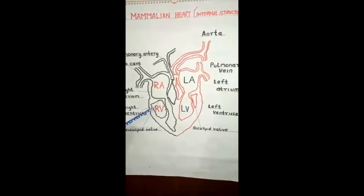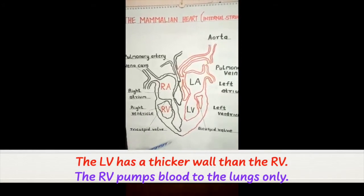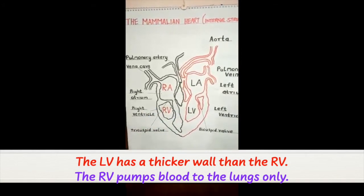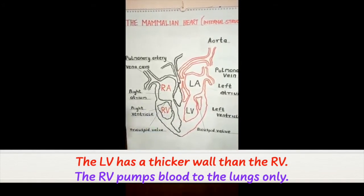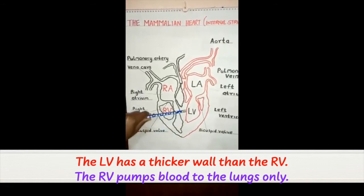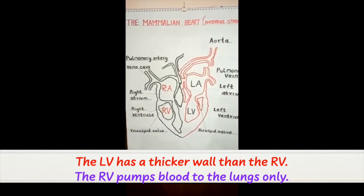But the right ventricle has a thinner wall because it only generates a force that is needed for the blood to flow to the lungs.